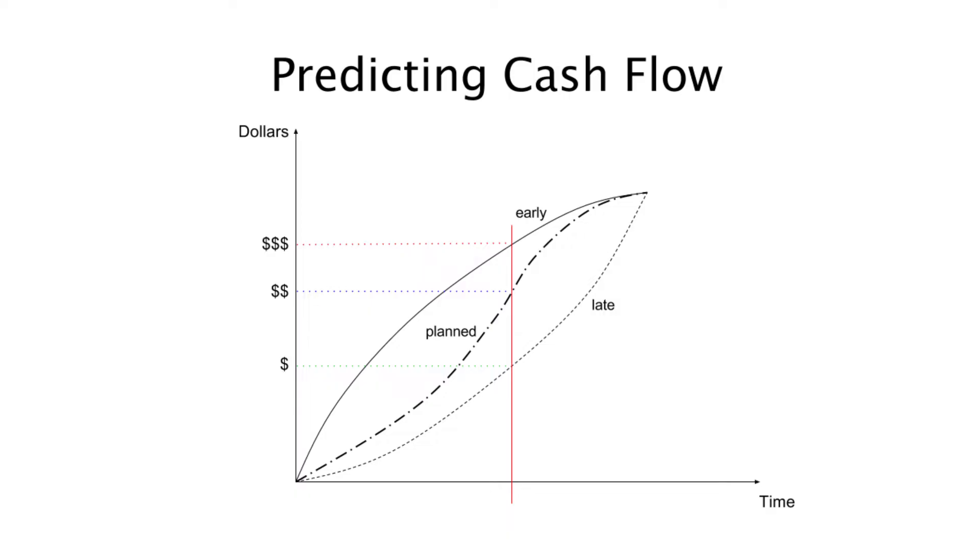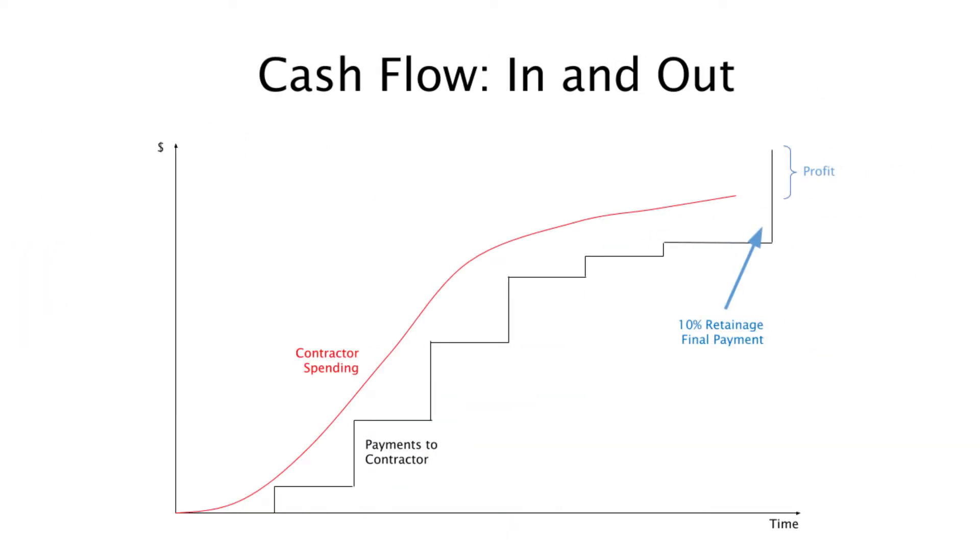At the bottom of that graph, you'll see the late curve, and that's if we do things as late as possible. In reality, it's probably going to be in between. We're not going to do all activities as early as possible and we're not going to do them as late as possible, somewhere in between.